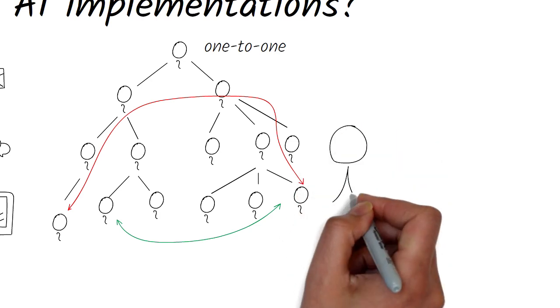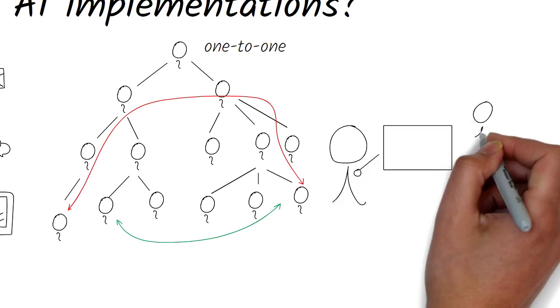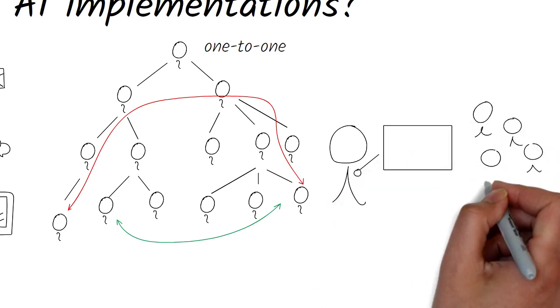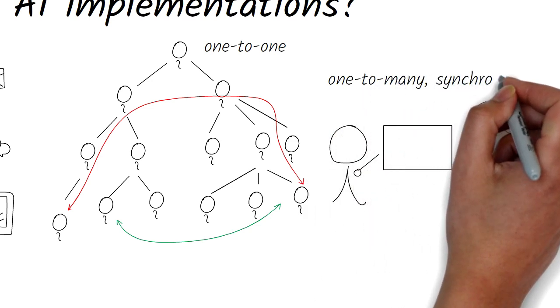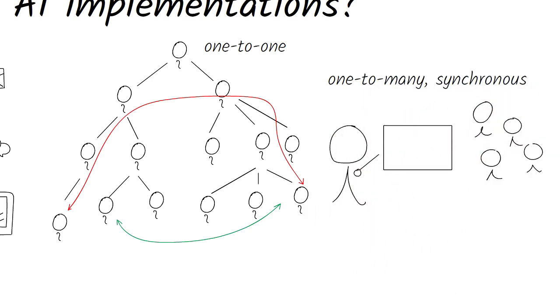Another way is one-to-many communication by sharing information, say, through a presentation. Here, the sharing is synchronous, which means that the speaker and the listeners have to be available at the same time.